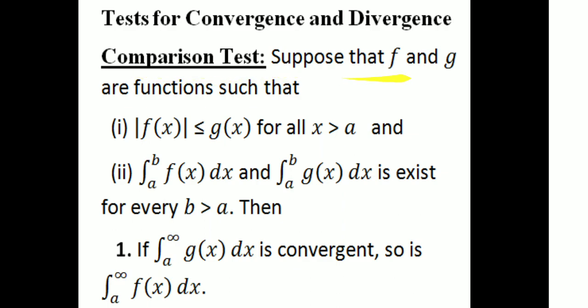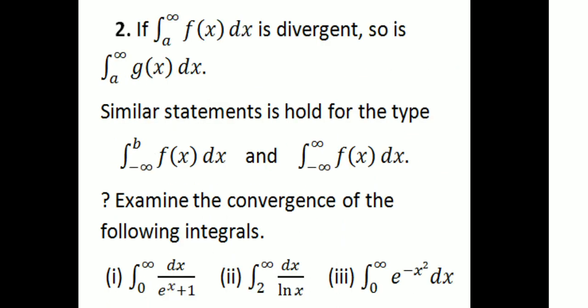Suppose that f and g are functions such that: first condition, |f(x)| ≤ g(x) for all x greater than a. And second, the integrals from a to b of f(x) dx and g(x) dx exist for every b greater than a. Then: first, if the integral from a to infinity of g(x) dx is convergent, so is the integral from a to infinity of f(x) dx. And second, if the integral from a to infinity of f(x) dx diverges, so does the integral from a to infinity of g(x) dx.